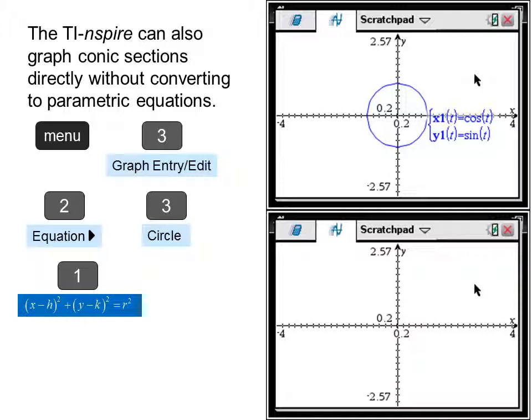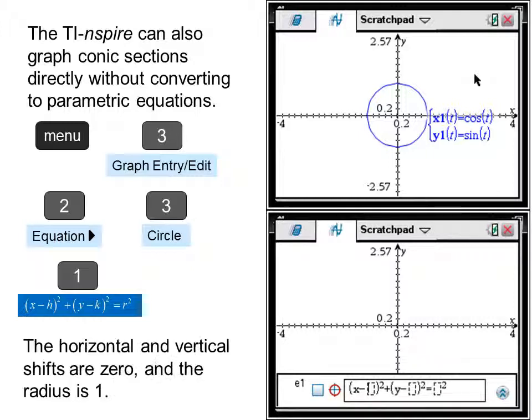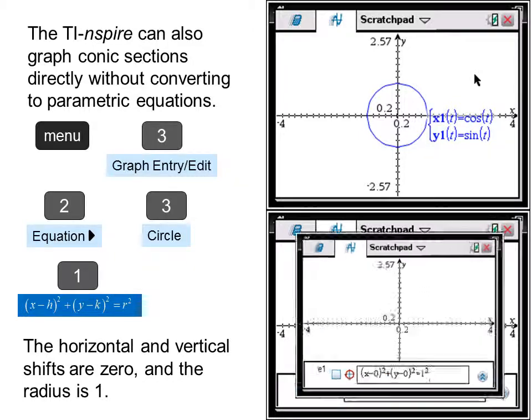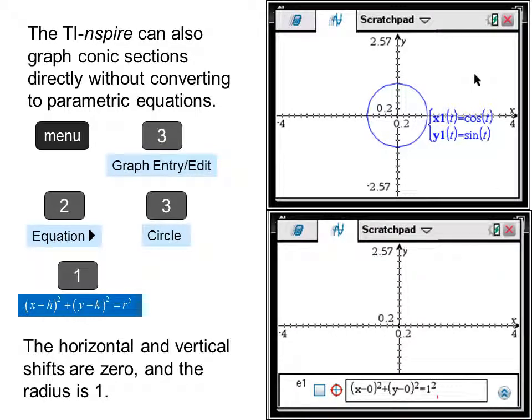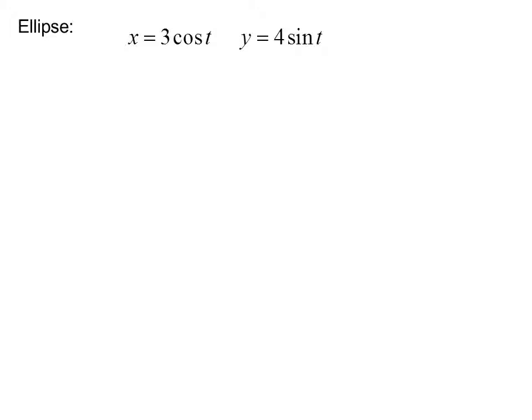Press menu, three, graph entry edit, two, equation, three, circle, and one, and we have the standard equation for a circle. The horizontal and vertical shifts are zero and the radius is one. So after we fill in our values, we get our circle, and notice the equation is right there on the screen.